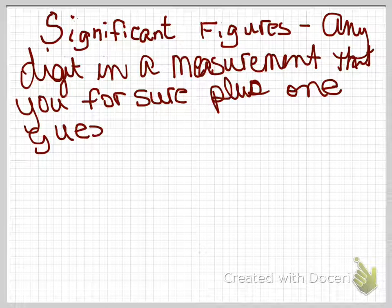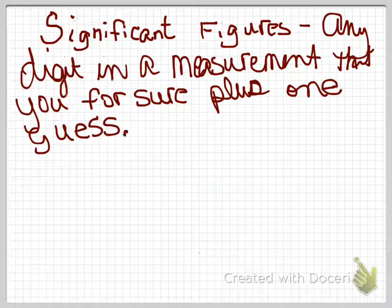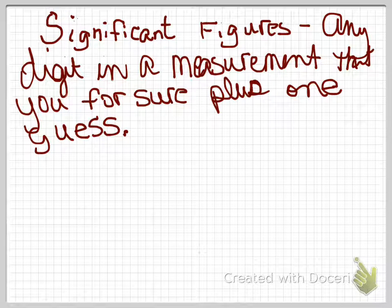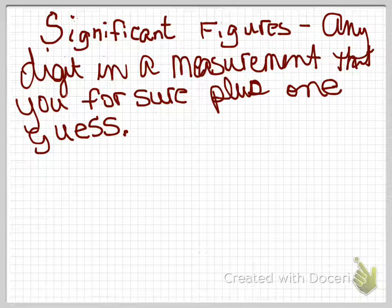The reason we have sig figs is because there are people who just round everything off, and then there are very picky people who put 12 decimals out there. So they decided there needed to be some rule. Plus, there were people with lots of money who had great instruments, and then there were people in labs literally using sticks to do their measuring.